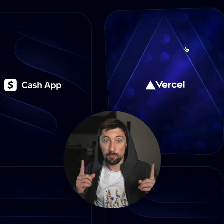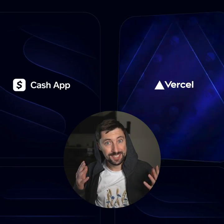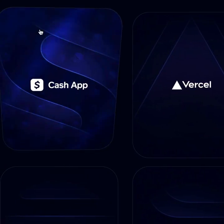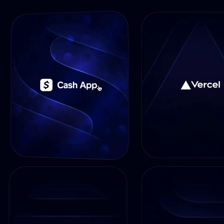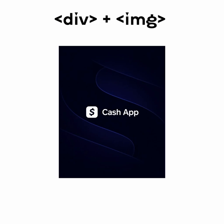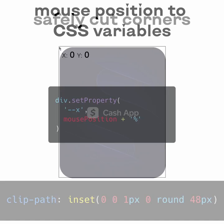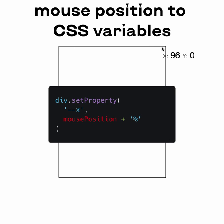Here's how to create this linear up animation with CSS. Let's create a simple div with an image, safely cut its corners, and then get mouse position into CSS variables.